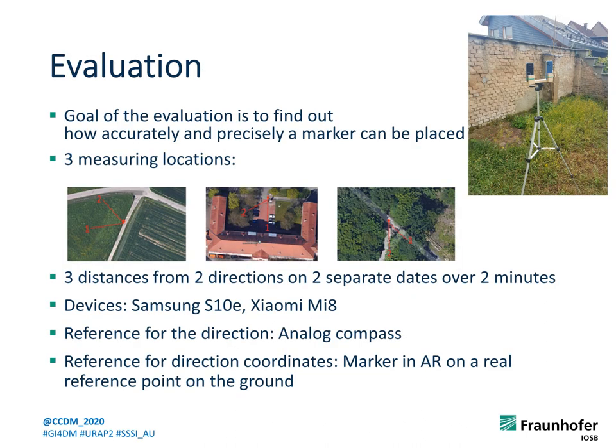Now to our evaluation. We wanted to find out how accurately and precisely a marker can be placed. We had three different locations: one was an open field with an official GPS location marker, the second was between buildings also with an official marker on the ground, and the third was a crossroad in the woods with a self-defined position. We measured three distances from two directions and on two different days to have different weather conditions. As the GPS location gets better over time, we took measurements for two minutes. We used two different devices: a Samsung S10e and a Xiaomi Mi 8. The Xiaomi has a dual-channel receiver. As reference for the compass, we used the good old analog compass, and as reference for direction, the marker on the ground was used.